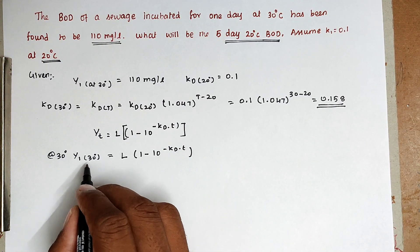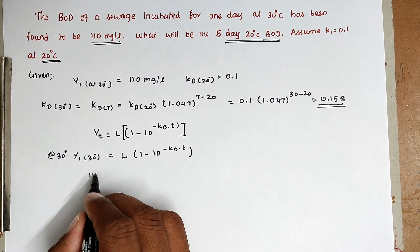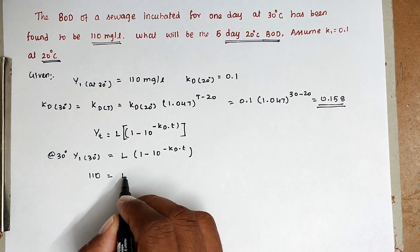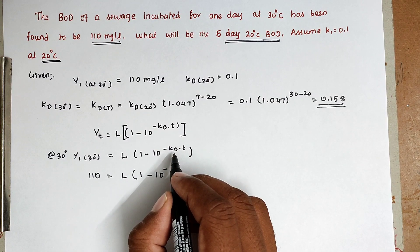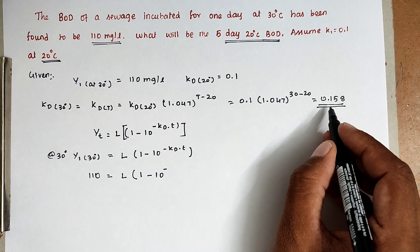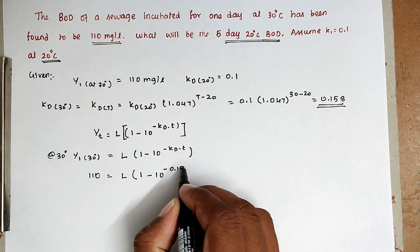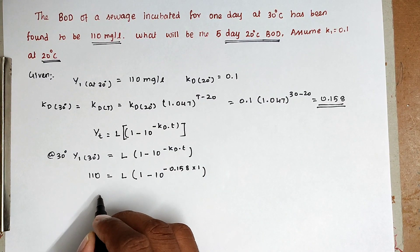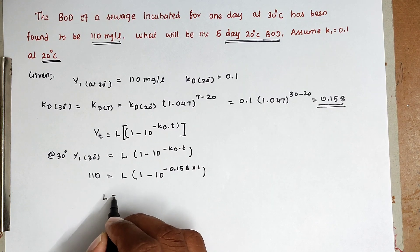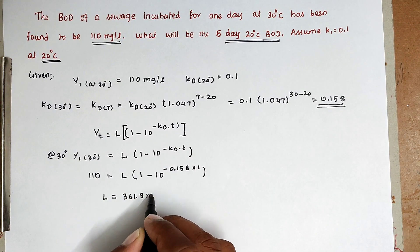Substituting the values: 110 = L × (1 − 10^(−KD at 30°C × T)). Using KD at 30 degree Celsius = 0.158 and T = 1 day, solving this equation with L as the only unknown, we get the ultimate BOD L = 361.8 milligram per liter.